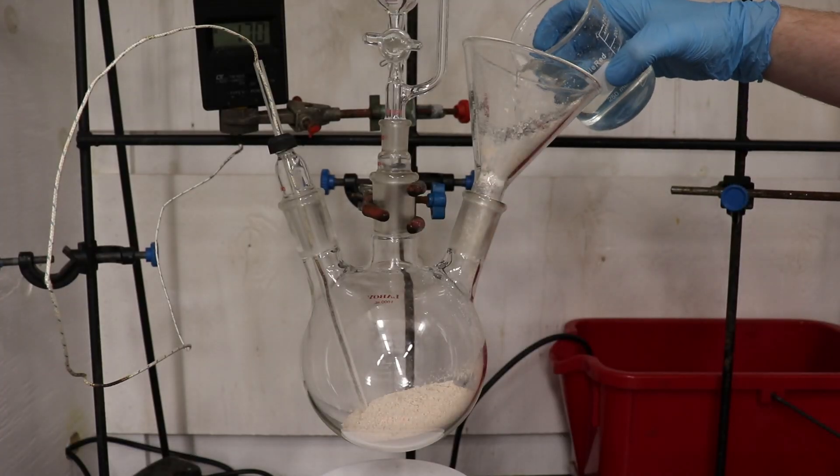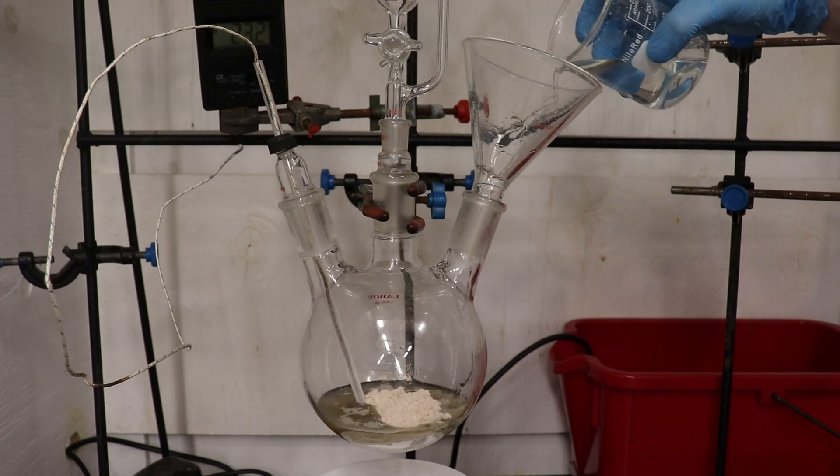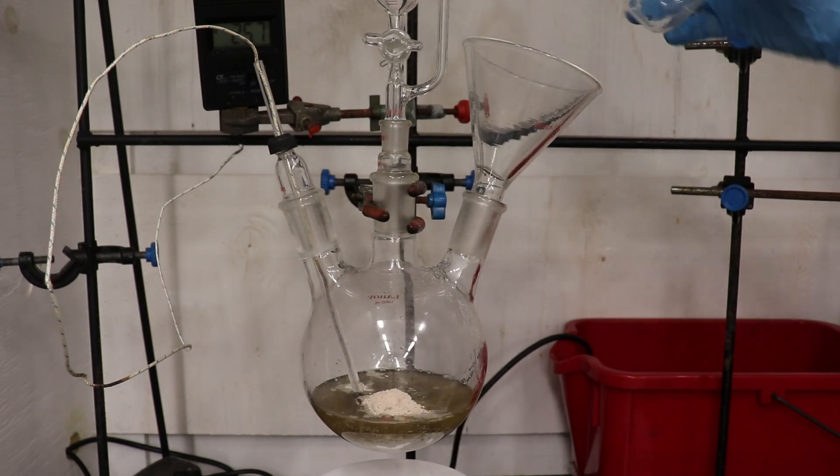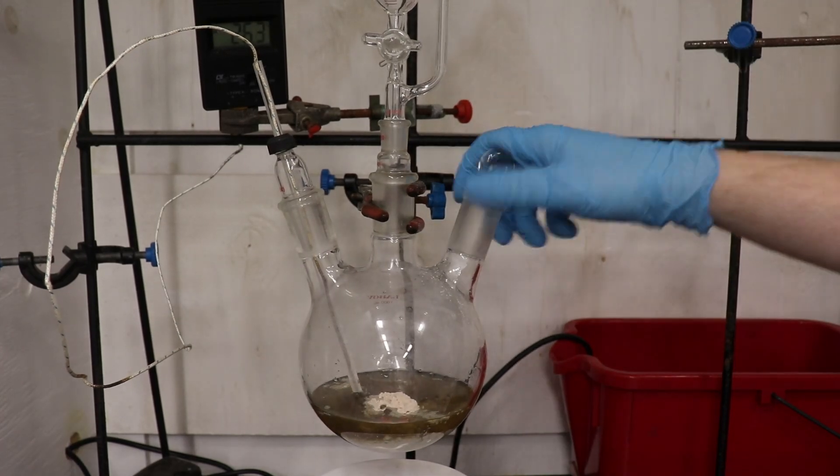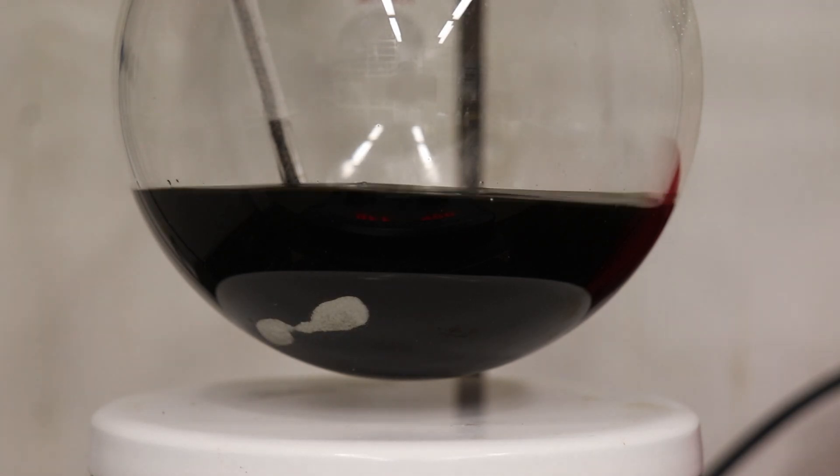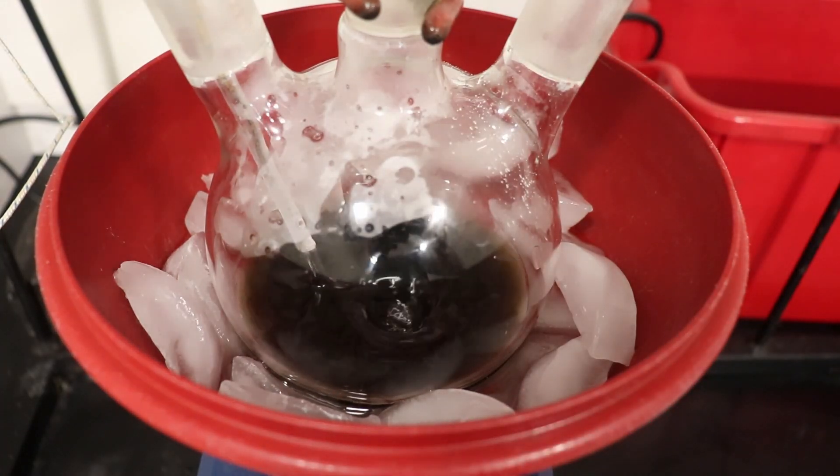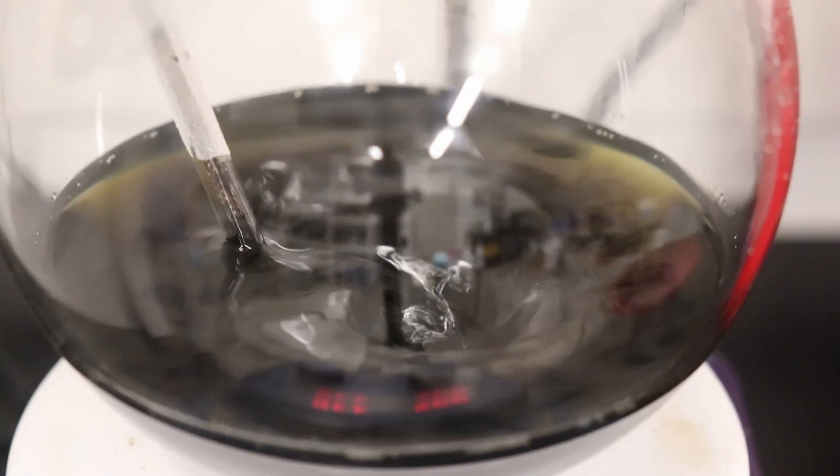The base solution was used to rinse out residual 2-napthol and poured into the flask. The 2-napthol dissolves in the base solution as the phenolic hydroxyl group is deprotonated by the sodium hydroxide forming sodium naphthalate, which is soluble in water. The darkening of the solution is due to the oxidation of the 2-napthol in air forming colored byproducts.